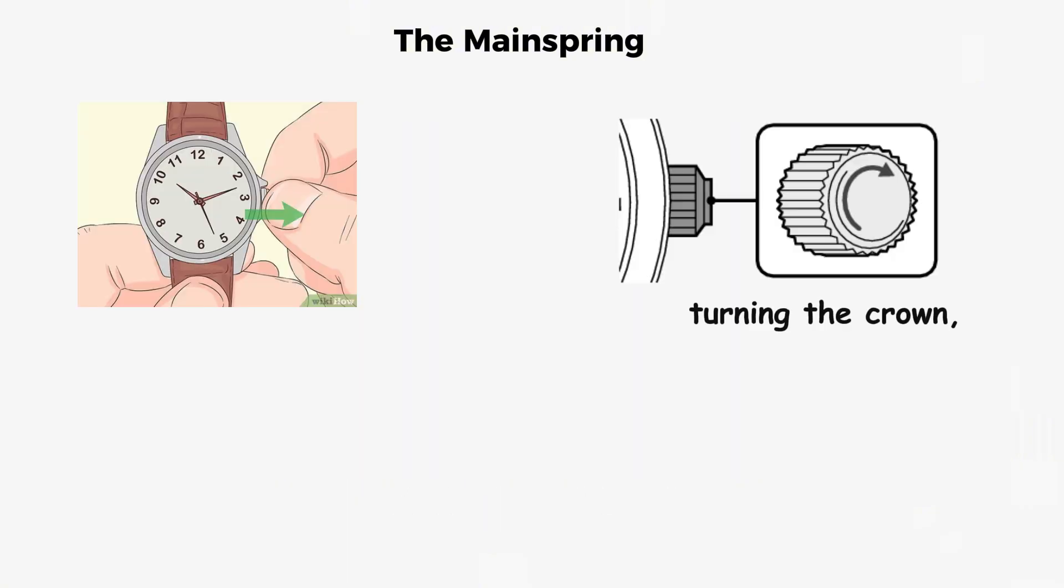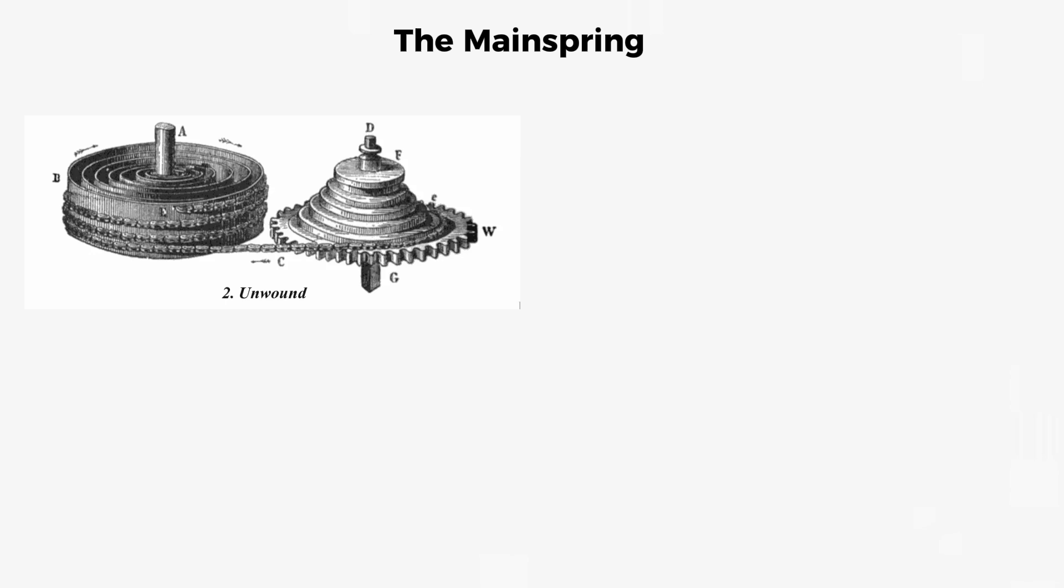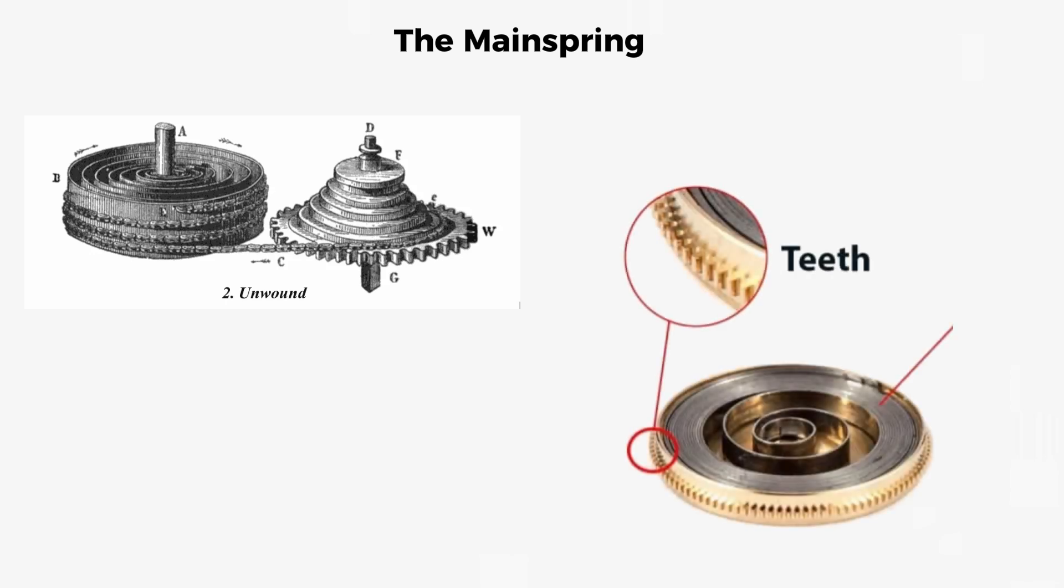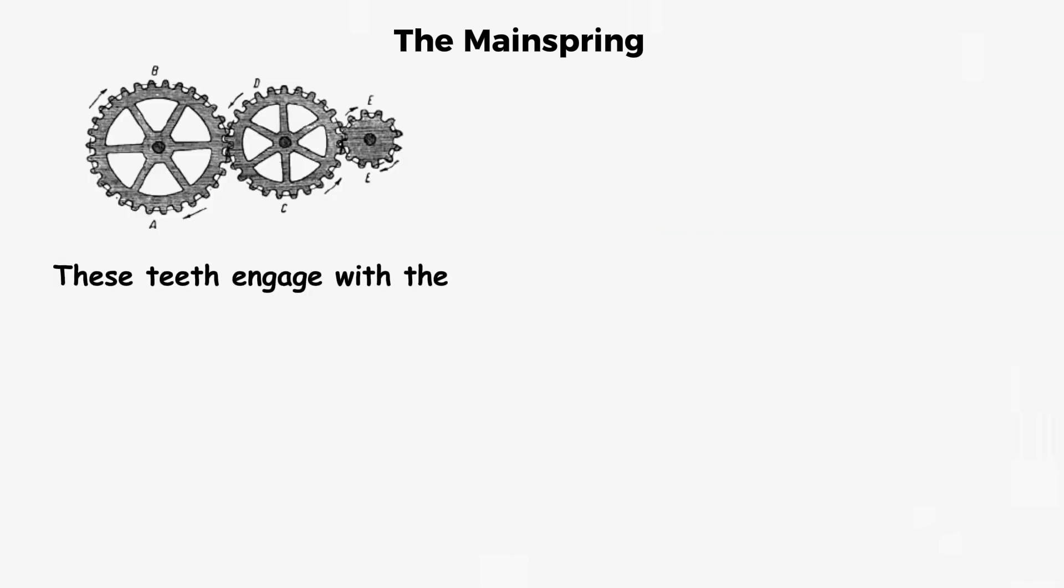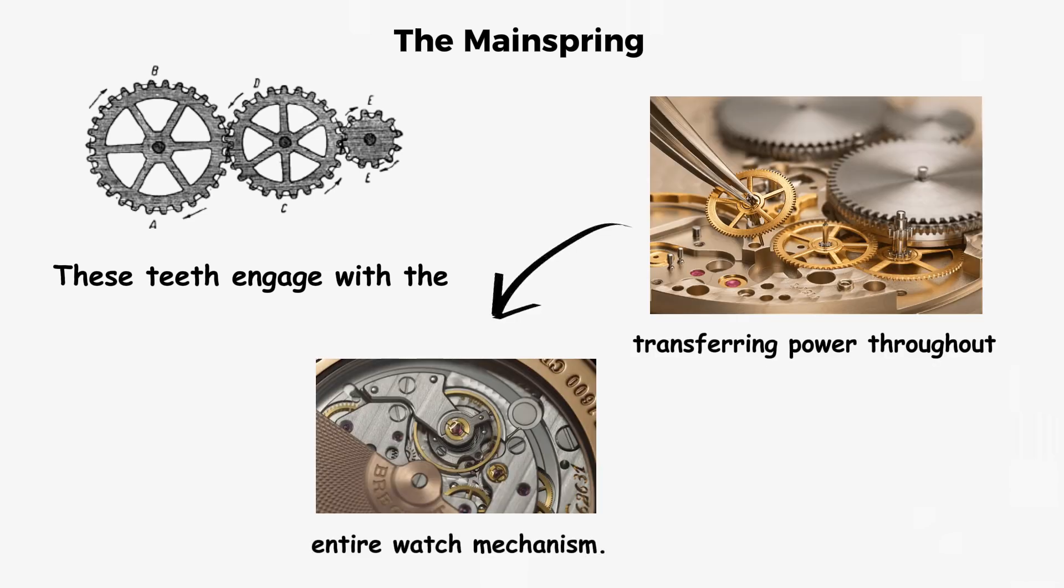When you wind the watch by turning the crown, you are tightening this spring around the central axle, storing potential energy. As the spring slowly unwinds, it rotates the barrel, which has gear teeth on its outer rim. These teeth engage with the first wheel in the gear train, transferring power throughout the entire watch mechanism.